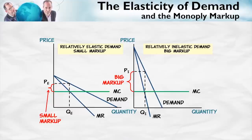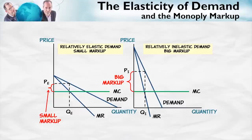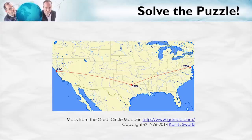Remember also that for a competitive firm, the demand for its product is perfectly elastic, and in that case price is equal to marginal cost. So it makes sense that the more elastic the demand curve is for a monopolist, the closer the pricing decision of the monopolist is to that of a competitive firm. When the demand curve for the monopolist is relatively elastic, price is going to be close to marginal cost. And the more elastic the demand curve gets, the closer the monopolist's profit-maximizing output is to that of a competitive firm. Big lesson: the more inelastic the demand, the bigger the markup.